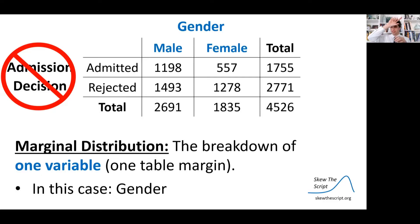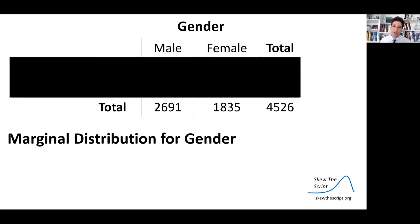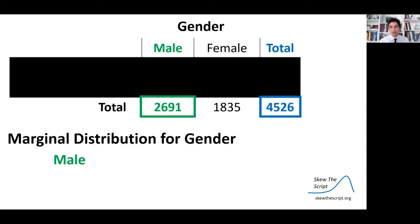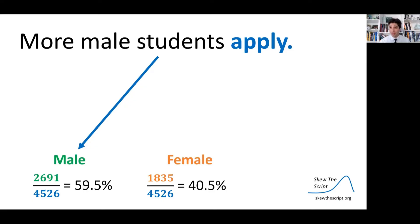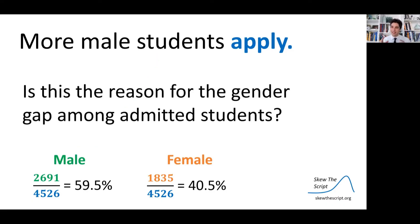When we think about margins, we think about margins on paper — the top margin, the side margin. We're going to look at the top margin, which is gender. Deleting the breakdown by admissions decision, we just look at the totals for gender. Among all 4,526 applicants, 2,691 were male. Dividing those numbers gives the proportion who are male: 59.5%. Doing the same for female gives 40.5% of applicants were female. So more male students applied. Is this gap in applications the driving reason behind the gap in admitted students?